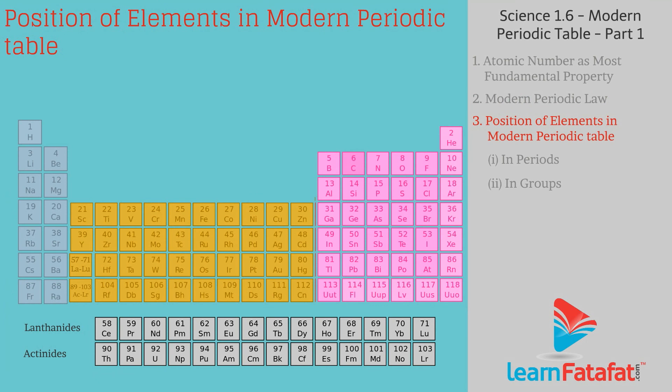Position of elements in Modern Periodic Table: The horizontal rows are called periods and vertical columns are called groups. There are 7 periods and 18 groups in the Periodic Table.